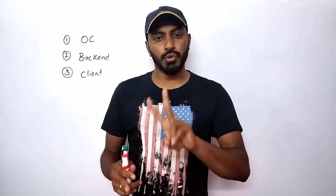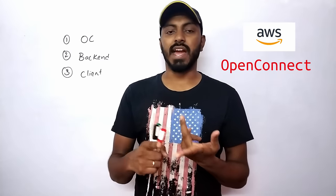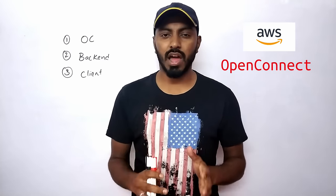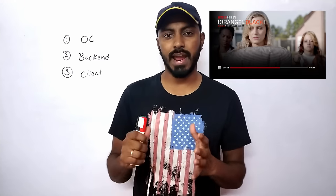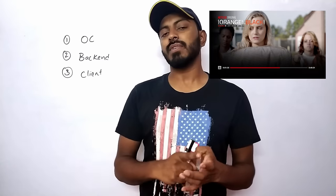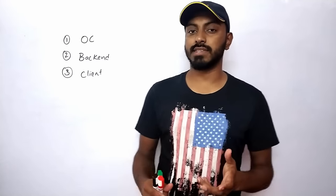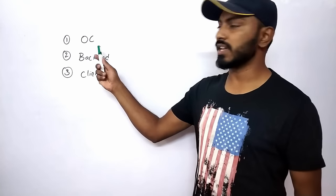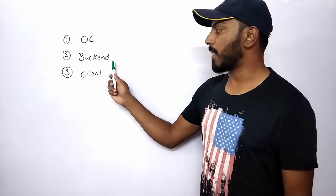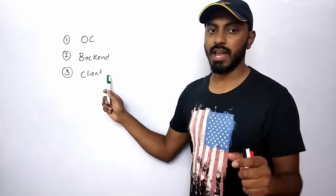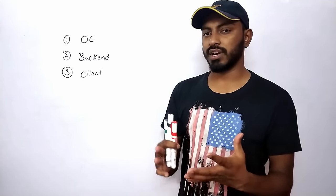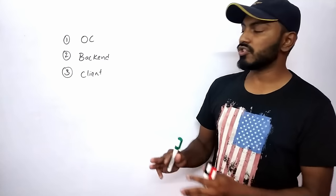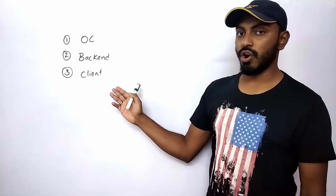Netflix operates in two clouds: the first one is AWS and the second is Open Connect. Both clouds must work together seamlessly to deliver endless hours of video. Netflix has three main components: the first one is Open Connect, the second one is the back-end, and the third one is the client. Let's first talk about some high-level working of Netflix and then jump into all three components in depth.